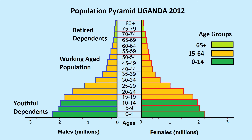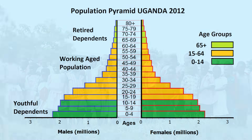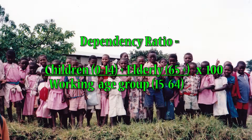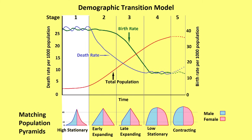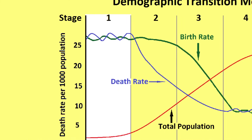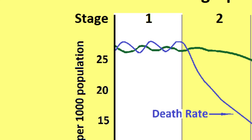A youthful population has a high dependency ratio. This is the ratio of the working age population to those who are dependents — that is, the young dependents below 15 and the elderly dependents aged over 65 who are retired. The working age population from 15 to 65 has to provide for a comparatively large population of children. Countries with population pyramids like this resemble countries in the first stage of demographic transition.